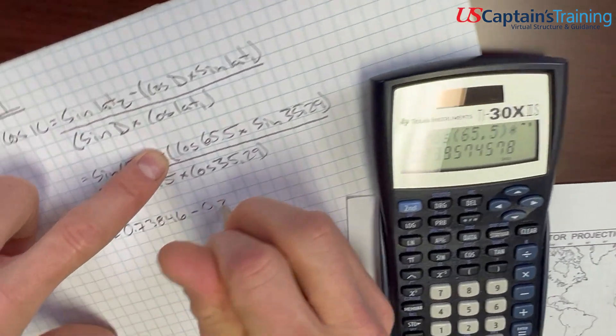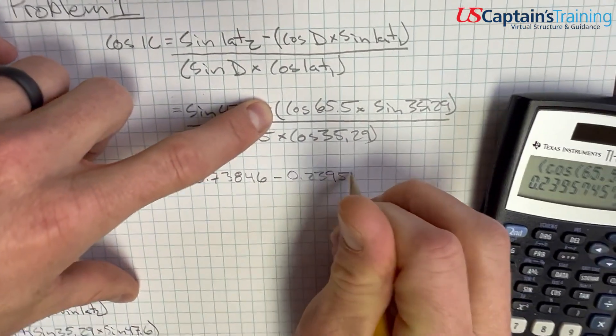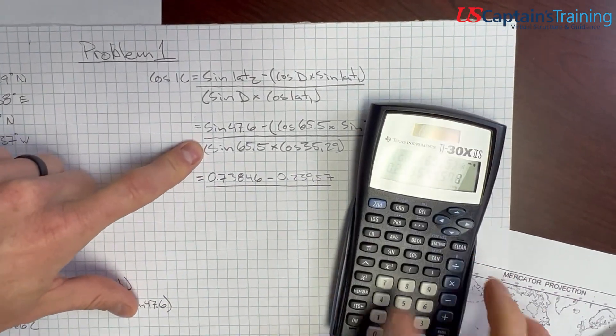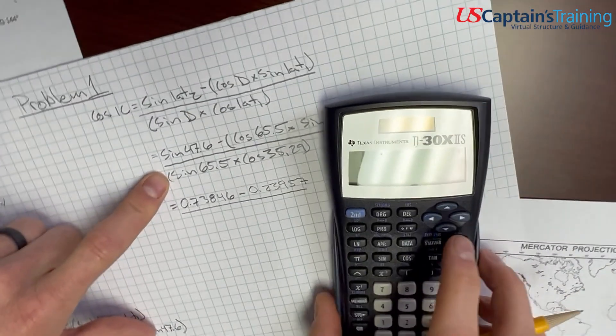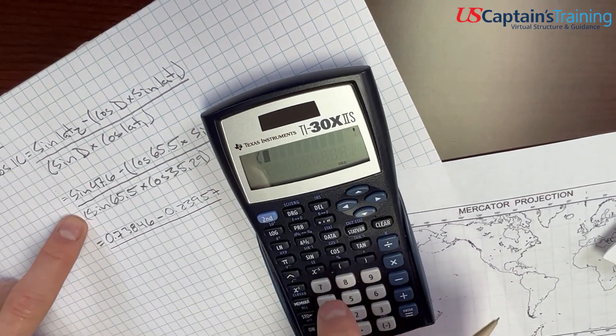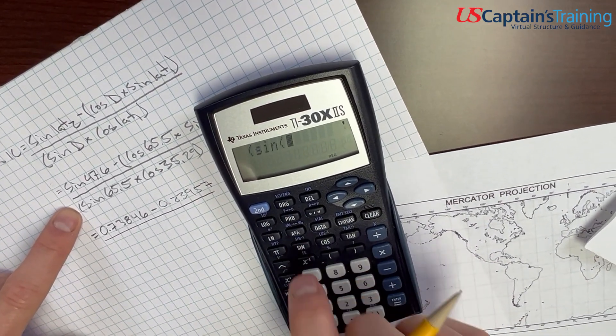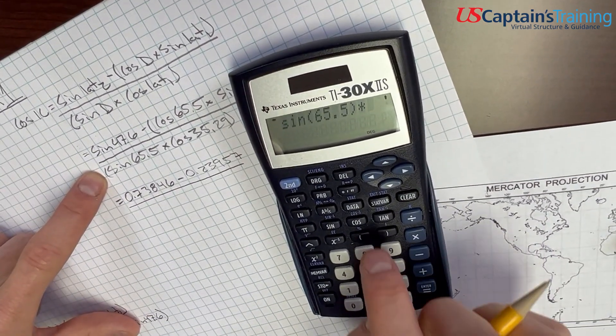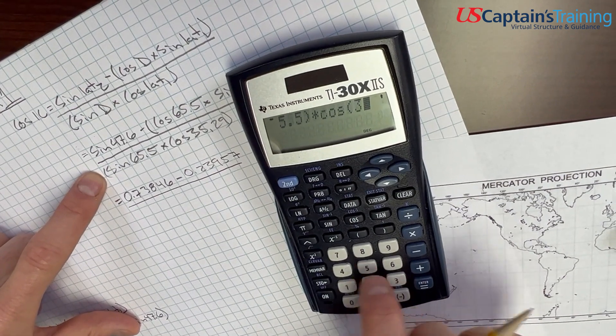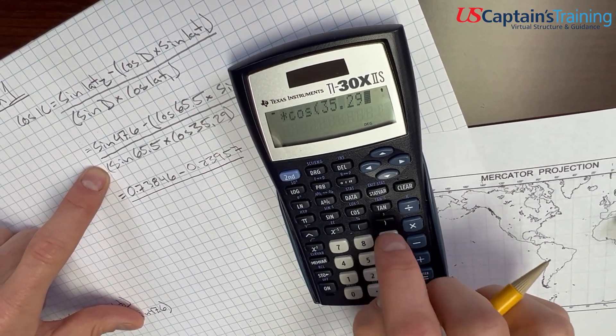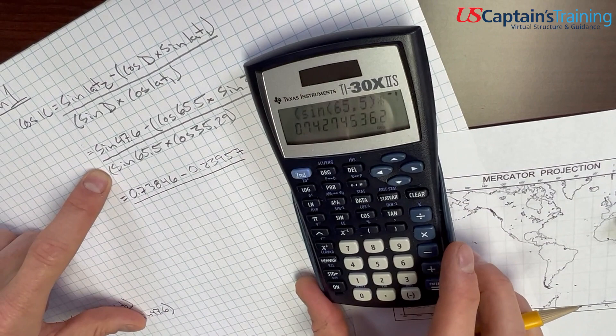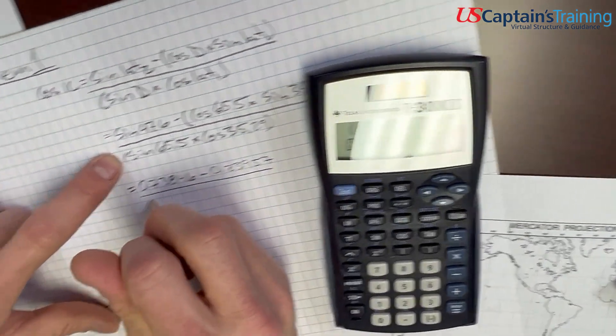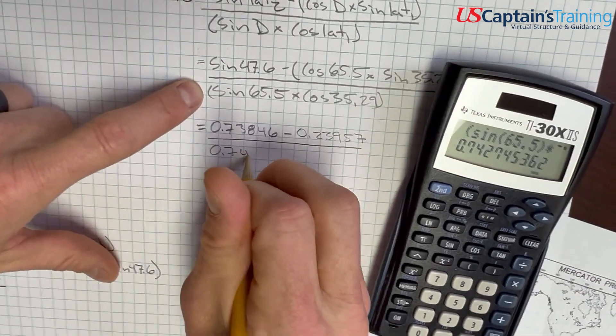And, all of this is over this sine, this bottom part. So, open these and say, sine 65.5, close, times cosine 35.29, close, close, equals 0.74275.